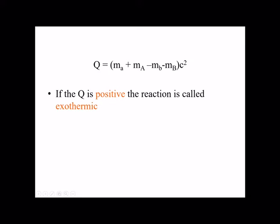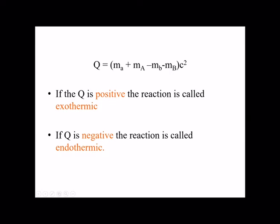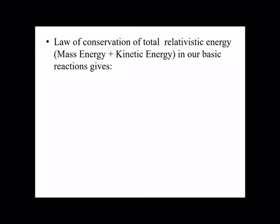In terms of the Q value: if you put in the values, find the difference, and multiply by c², and you find Q is positive, that means the reaction is exothermic — some heat is released. But if you find a negative value for Q, then the reaction is endothermic, meaning we have to supply some energy for the reaction to happen.